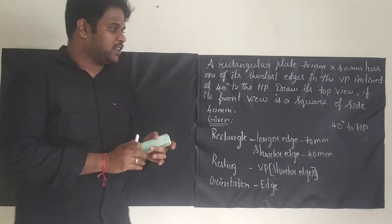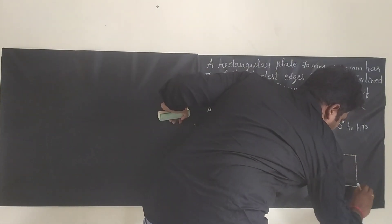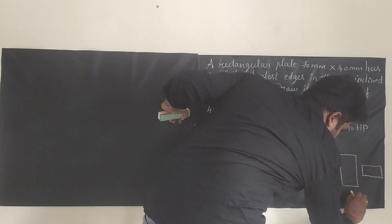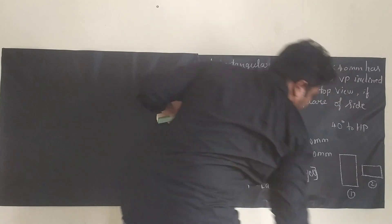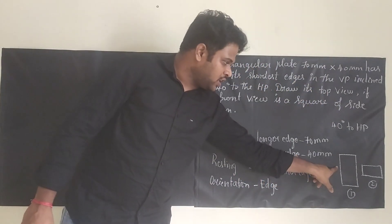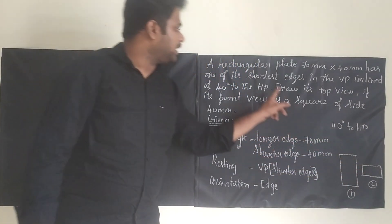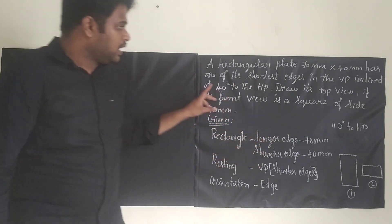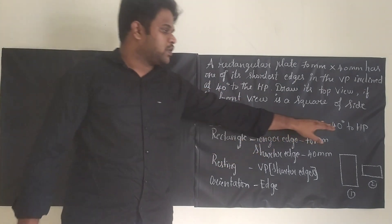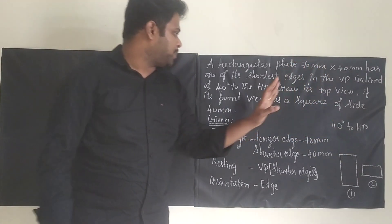We have to check — there are two types of rectangle diagrams we can draw. In one type the long edge is at the base, and in the other the short edge is at the base. In our case we are going to take the second diagram, because it is clearly mentioned as a shorter edge. Then it is inclined at 40 degrees to HP, so we are going to incline the surface to 40 degrees to HP.